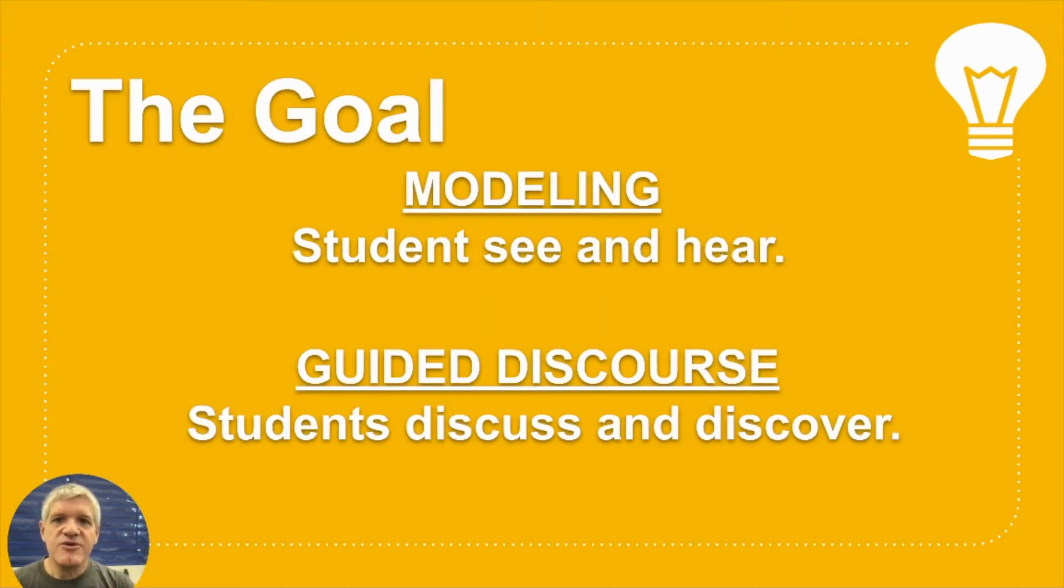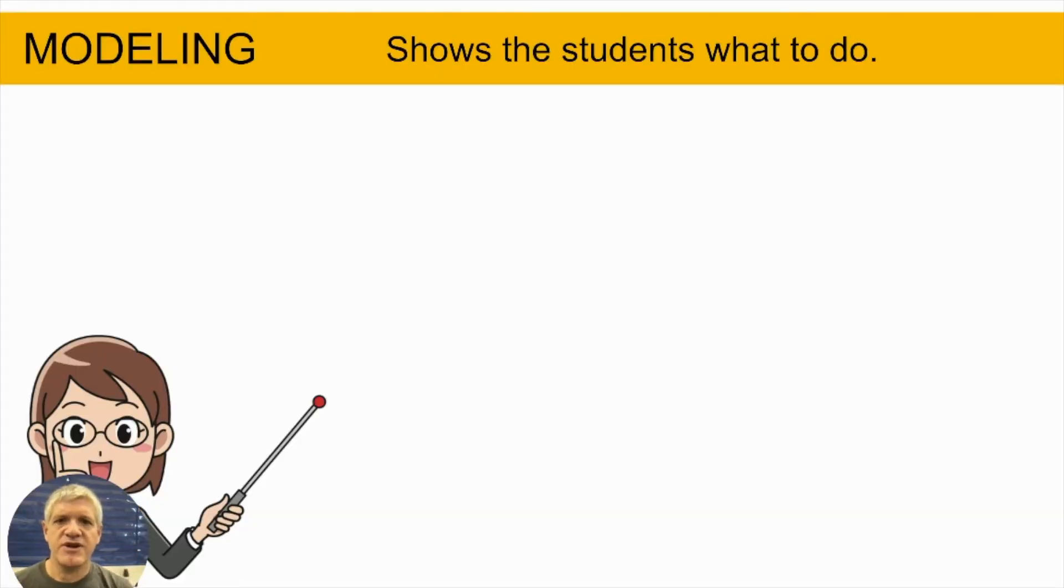So modeling and guided discourse are two very effective ways for doing this. In modeling, students see and hear what it is that they need to do. In guided discourse, they have a discussion looking at two examples and discover why is this one's right and this one's wrong. So let's talk about each one of these.